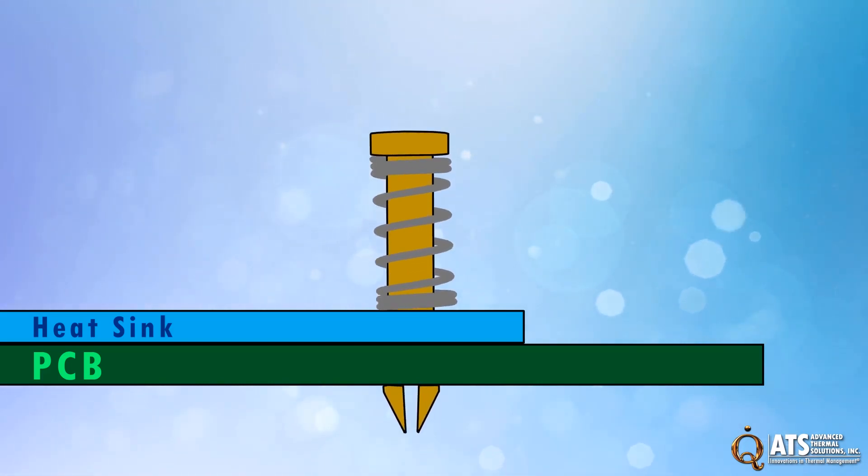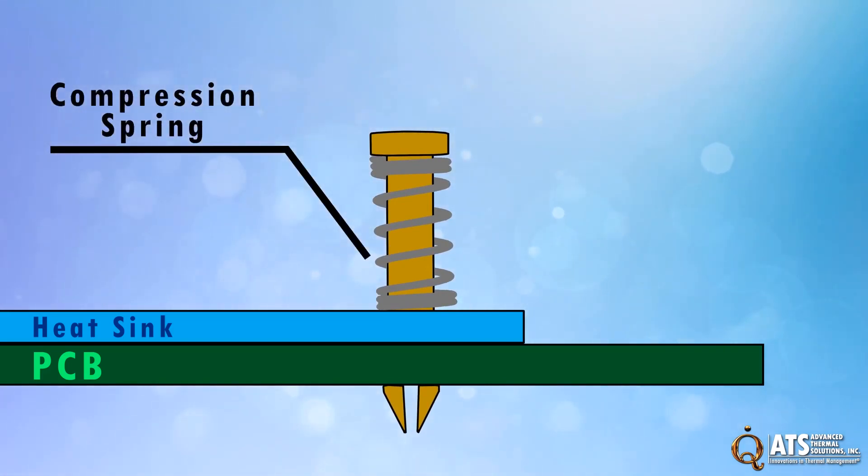Once installed, the barb securely retains the pin. The compression springs hold the assembly together and maintain contact between the heatsink and components.